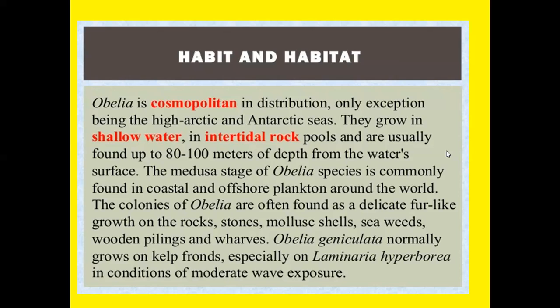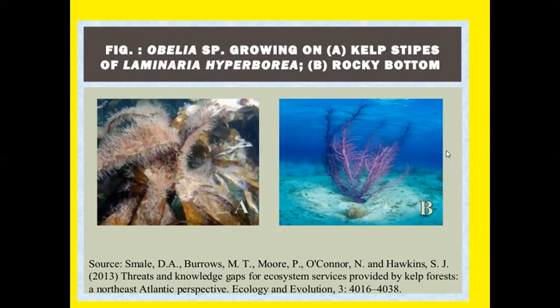Obelia geniculata normally grows on kelp fronds, especially on the species Laminaria hyperborea. The figure shows Obelia species growing on the stipe of Laminaria hyperborea and on rocky bottoms.